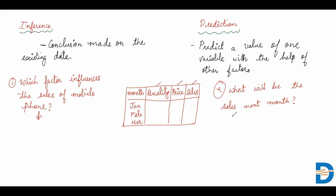Now if I want to find out what will be the sales for next month — to predict that future value — that is called prediction. The answer to that kind of question is called prediction, whereas the answer to finding relationships is called inference. Whenever we say prediction, it talks about a future value you are going to predict. When you try to find relationships or get information on the existing data, that we call inference. I hope you now understand the difference between inference and prediction. Thank you all.